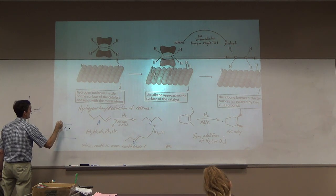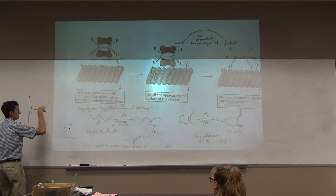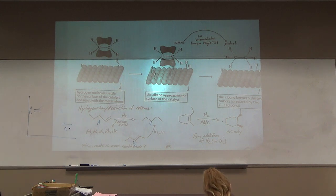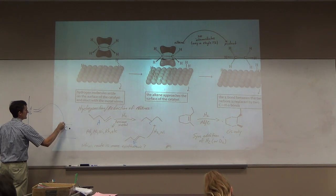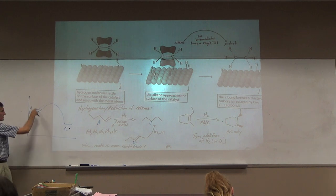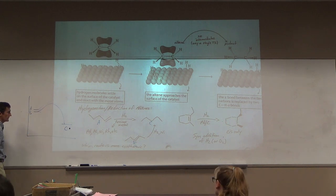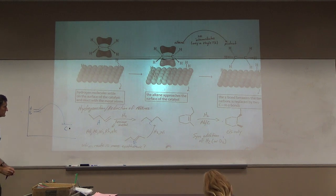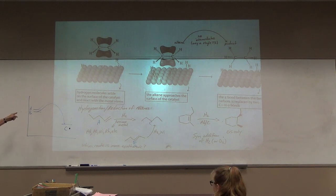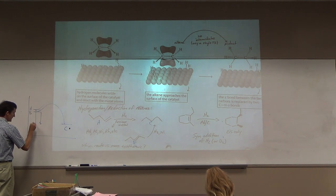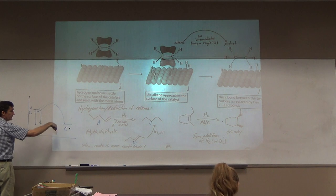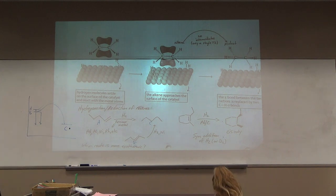Here we go now. We have just a transition state where the atoms are being shot in from the metal catalyst. They start differently but they become the same thing. Which one's more exothermic? A. B comes to here, A comes to here, A drops further. A is giving off more energy. A is more exothermic, because A sits higher than B over here.